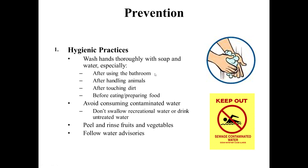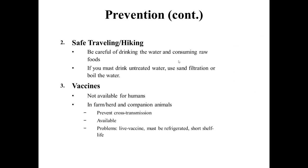Hygienic practices involve washing hands thoroughly with soap and water after using the bathroom, handling animals, touching dirty surfaces, or preparing food. Avoid consuming contaminated water, do not swallow recreational water, and avoid untreated water. Peel and rinse fruits and vegetables, and follow water advisories. For safe travel and hiking, drink safe filtered water and avoid raw foods. Vaccines are not available for humans but are available for animals and should be used. Halogenation is generally ineffective as cysts are resistant. Filtration is the most effective way of removing Cryptosporidium cysts, and other disinfection methods such as ozone or UV radiation can also be used.